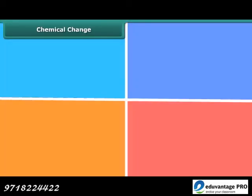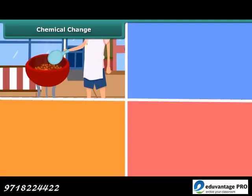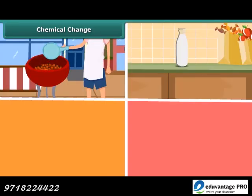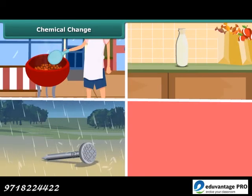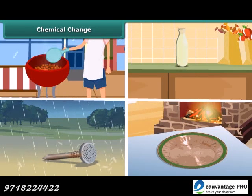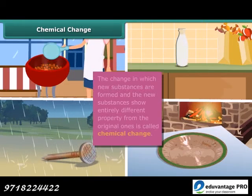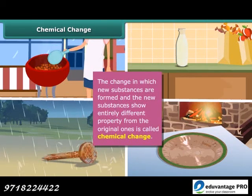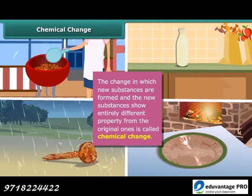Chemical changes include the burning of coal, the spoilage of milk, rusting of iron, and formation of green film on copper. A substance undergoes a chemical reaction during a chemical change.